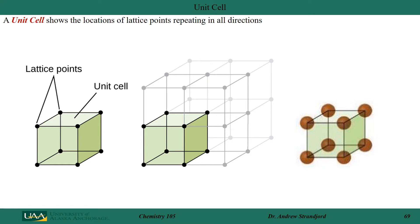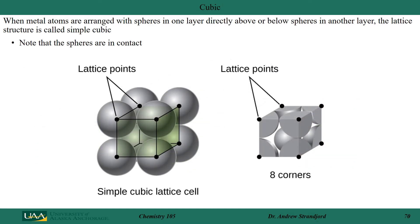Metals often form crystalline solids where the metal atoms are arranged with one sphere representing the metallic atom in a layer which is either directly above or directly below other metal atoms. We call this crystalline lattice structure simple cubic, as shown here. The lattice points are represented by the center of each atom's nucleus. The unit cell only contains essentially one quarter of each of the metal atoms. In a simple cubic lattice cell, all the spheres are directly in contact with each other, so they're packed as tightly as they can be.